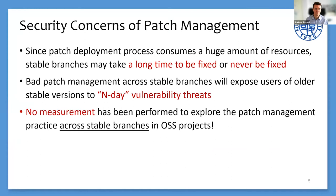However, the patch management process consumes a huge amount of resources. It requires developers to check vulnerability disclosures, develop patches, deploy patches, and test patches. Hence, stable branches may take a long time to be fixed or may never be fixed, exposing users of old stable versions to security threats. To the best of our knowledge, no measurement has been performed to explore patch management practice across stable branches in OSS projects.